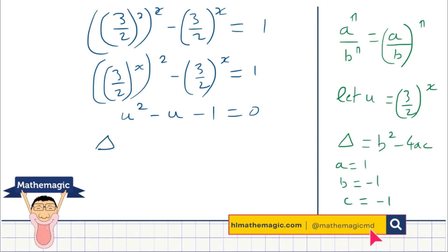So our delta value here is going to be b squared, so negative 1 squared minus 4 times 1 times negative 1. And negative 1 squared is 1. Negative 4 times 1 times negative 1 is plus 4. And 1 plus 4 is equal to 5, which is positive. Therefore, we will have two solutions.